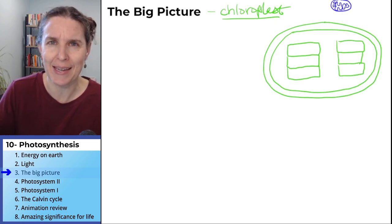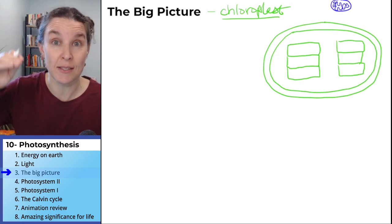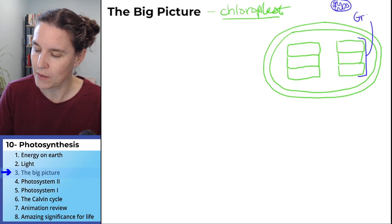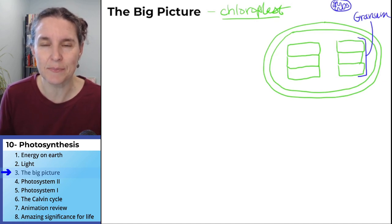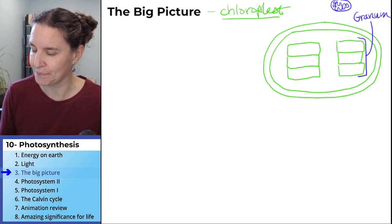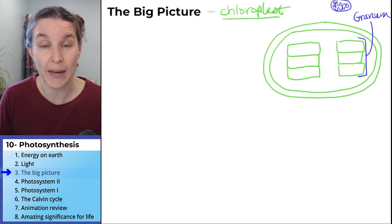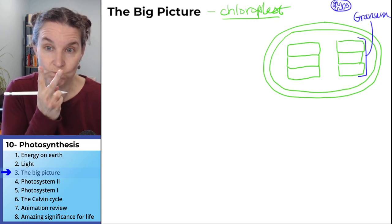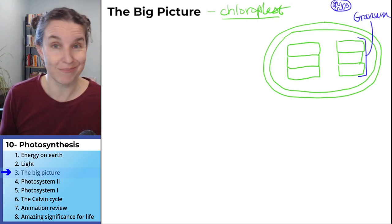Remember how the Golgi body was like stacks of pancakes? It's like there are stacks of bags. I've heard them described as like stacks of coins, green coins. The stacks have a name. So one whole stack is called a granum. The anatomy of a chloroplast is more than the anatomy of the mitochondrion. There's more terminology here. How many grana do we have in my chloroplast? That would be two. Two grana. Grana is plural, granum is singular, but they mean the same thing.